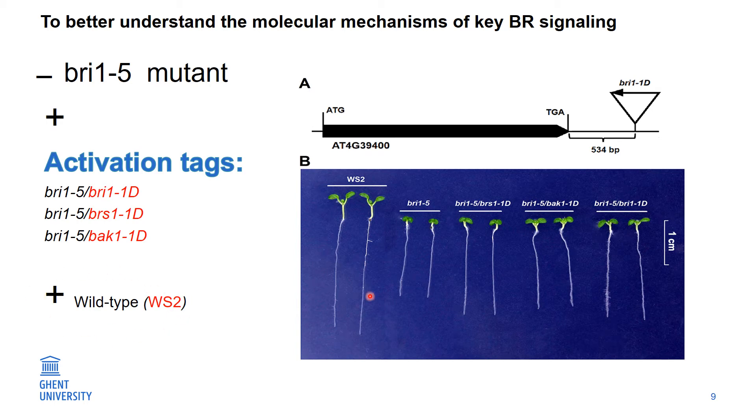Here in this figure, you see the phenotype of the wild-type. And for the BRI1 mutant, we have shorter seedling plants. But the suppressor line could recover the phenotype of the BRI1. As you can see, these phenotypes are close to and comparable to wild-type.